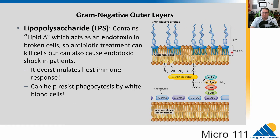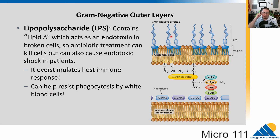The LPS layer is what makes gram-negatives so difficult to deal with. There's something called lipid A in there — this is the endotoxin component. When the cell membrane gets broken apart, say by antibiotics, it releases lipid A, which is toxic to us. It overstimulates our immune system and can help resist phagocytosis by white blood cells. The region where the peptidoglycan layer sits between the two membranes is called the periplasm. The two membranes are held together by a protein called murein lipoprotein, so they don't float apart.